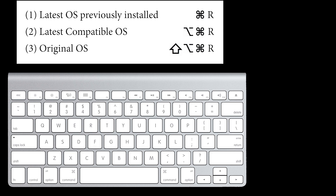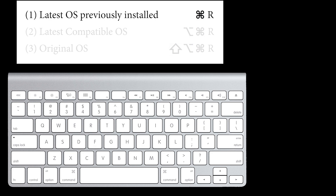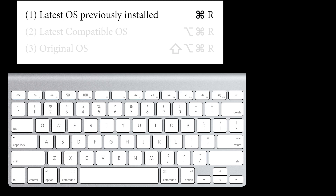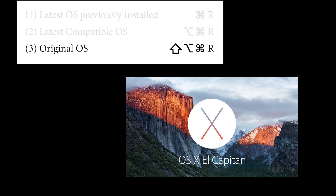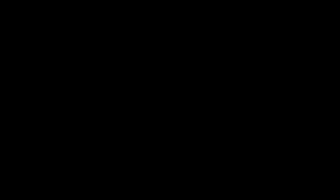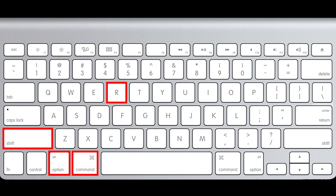Apple recommends that you use the first option, which is Command and R, if you're selling or giving away the Mac that is using OS X El Capitan or earlier, to ensure that the installation isn't associated with your Apple ID. But as I said, I'm going with Option 3, which is to take it back to the factory defaults. So holding down my key combination after the restart,